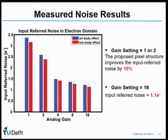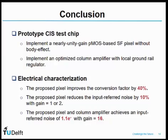This figure shows the measured noise results. When the gain setting is 1 or 2, the proposed pixel structure reduces the input-referred noise by 10%. When the gain setting is 16, the input-referred noise achieves 1.1 electrons. In conclusion, in this work we implemented a prototype PMOS-based source follower pixel without body effect achieving nearly unity gain, and an optimized column amplifier with a local ground rail regulator. The proposed pixel improves the conversion factor by 40%, reduces input-referred noise by 10% at gain equal to 1 or 2, and achieves 1.1 electrons input-referred noise at gain equal to 16.